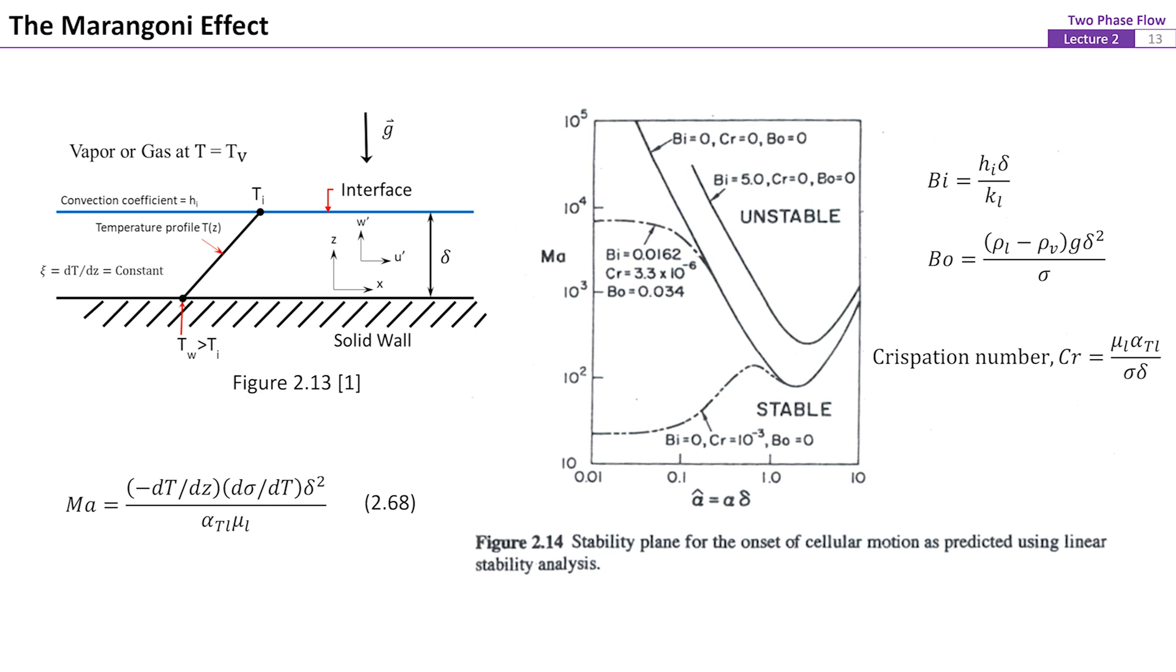Also, the position of the neutral curve is significantly dependent on the crispation number. The crispation number approaches 0 for thick liquid layer of high surface tension. From figure 14, it can be seen that the liquid thin film system is more easily get unstable with increasing the crispation number.